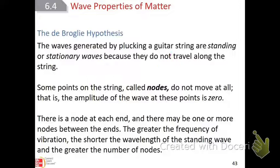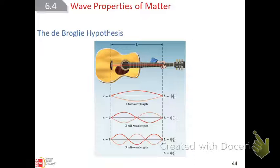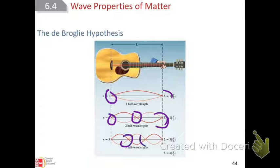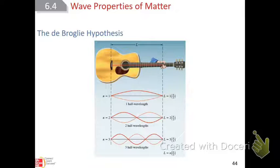If you took a slinky and slung it, that wave would travel all the way down. But a guitar string — that wave looks like it's just standing in place vibrating. Some points on the string have no amplitude; those are called nodes. There could be one node or more nodes — there's going to be a node at the end of the guitar string. If you put your finger right there, you would not hear any noise. It's going to determine the pitch of your guitar: the higher the frequency, the higher the pitch.